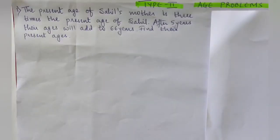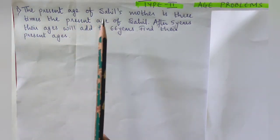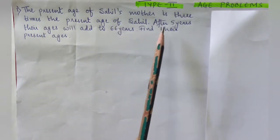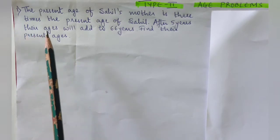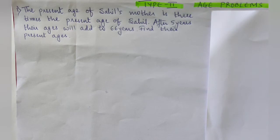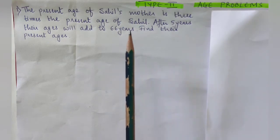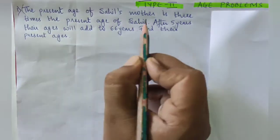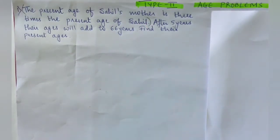Hello students, let us learn type two word problems — those are age problems. The present age of Sahil's mother is three times the present age of Sahil. After five years their ages will add to 66 years. Find their present ages. In this word problem we have to find the present age of Sahil as well as the present age of his mother.